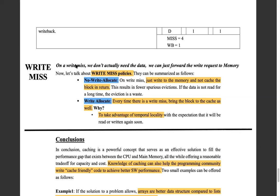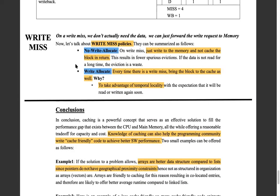To clarify the naming: write allocate means on a write miss you write to memory and also allocate a block on the cache — bring it back. No-write-allocate means on a write miss you just write to memory only, without updating the cache. Write allocate takes advantage of temporal locality; no-write-allocate avoids spurious evictions. These are two policies based on probabilities about whether the data will be accessed again.